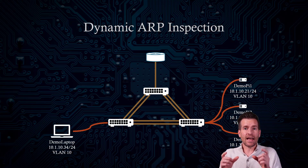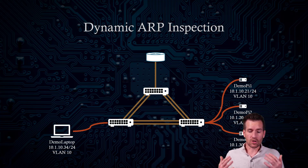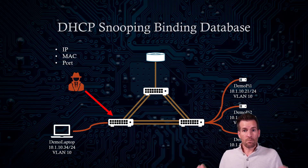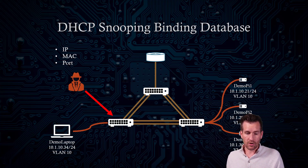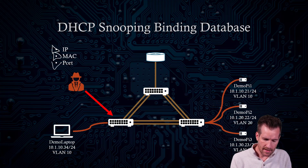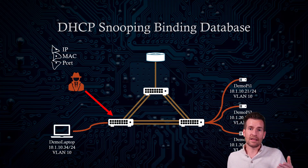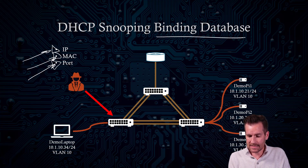The real resolution is Dynamic ARP Inspection, or DAI. DAI inspects ARP messages and verifies that they are legitimate. It is very similar to DHCP snooping — in fact, you must have DHCP snooping enabled in order to use DAI. DAI uses the DHCP snooping binding database, which records the IP address, MAC address, and port numbers of devices on your network, to ensure that information coming across a specific port matches the MAC and IP address in that binding database.